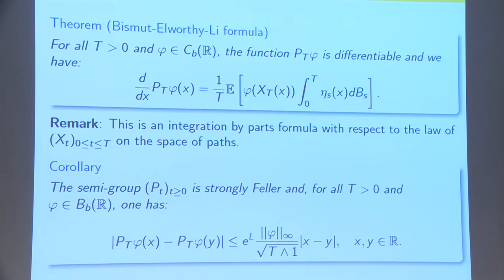That's the idea of the Bismut-Elworthy-Li formula. We have the following equality. The derivative of the semi-group P_T φ is given by 1 over T, expectation of φ of X_T of X, and multiplied by this stochastic integral: integral from 0 to T of η_S dB_S. As you can see, we got rid of the φ prime here. We have no more derivative. But, there's the cost that we have this new random variable here, which we have to bound.